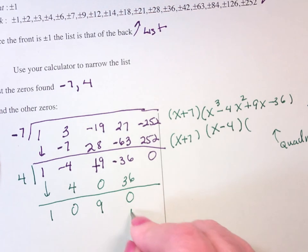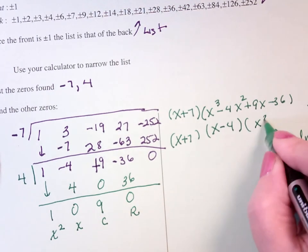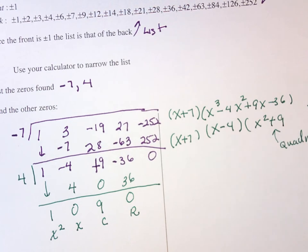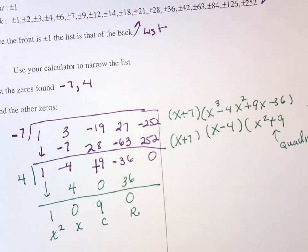This is the remainder, constant, coefficient of X, coefficient of X squared, so this is going to be X squared plus 9. So, that's the quadratic.